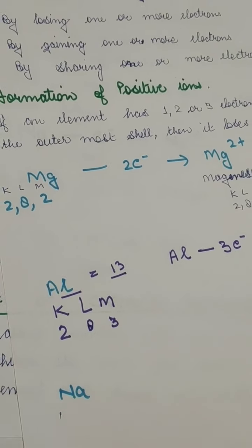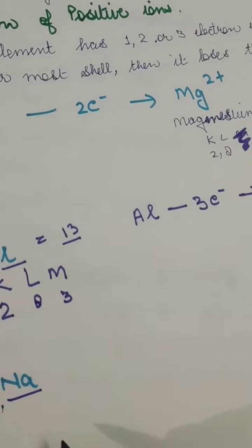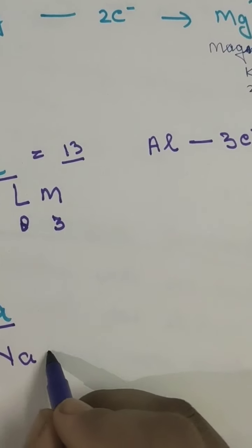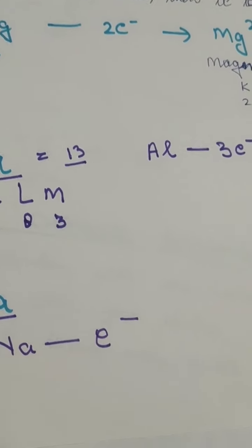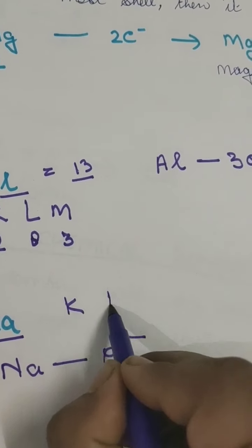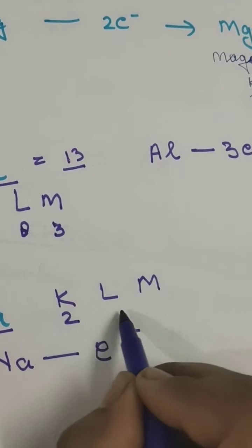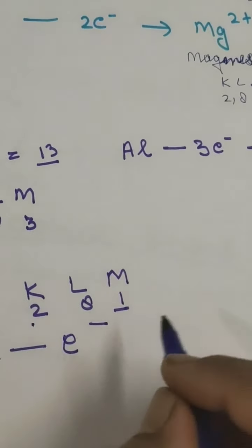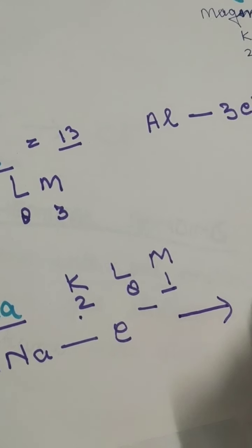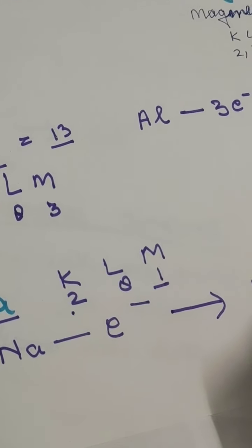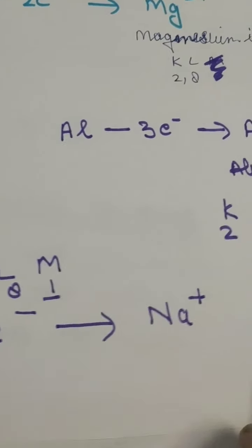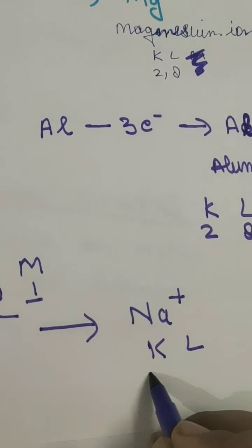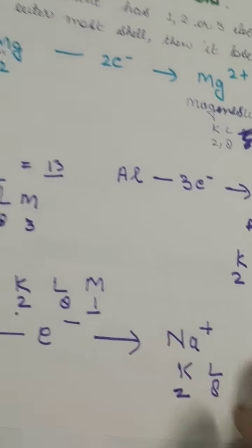In the case of sodium, we know that it has atomic number 11. Sodium has K, L and M shells with 2, 8 and 1 electrons. Since only 1 is extra, it will donate only 1 electron and acquire a positive charge of 1. So it will be the sodium ion Na⁺. Its configuration would then be K and L shells only with 2 and 8 electrons. I hope it's clear.